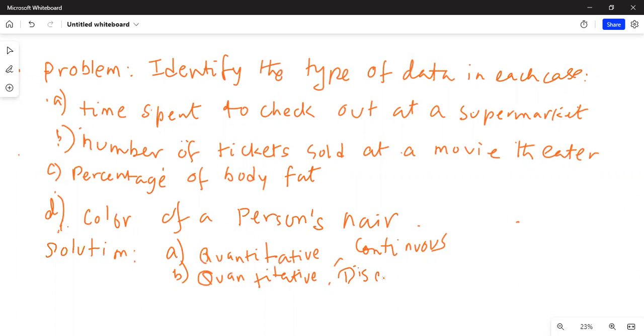Discrete is something that can be counted. And continuous data is something that can be measured. So discrete is something that can be counted, something that can be listed. Continuous quantitative data is something that can be measured.